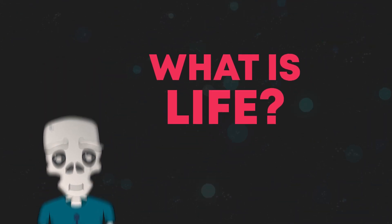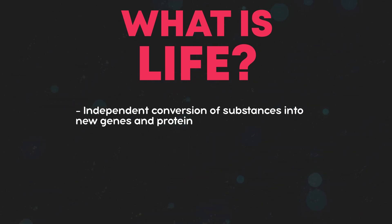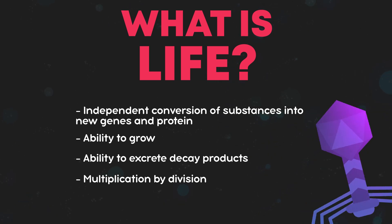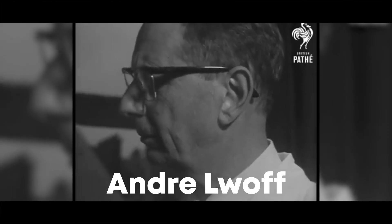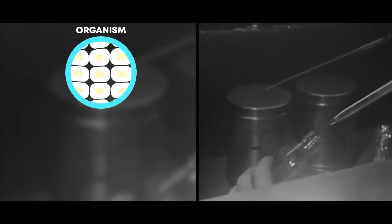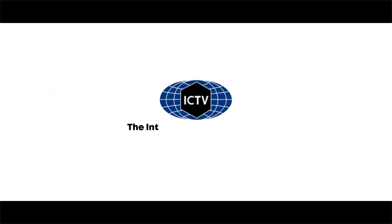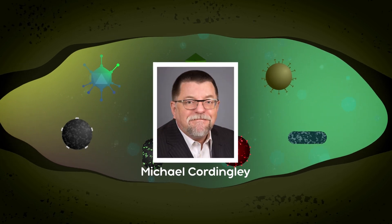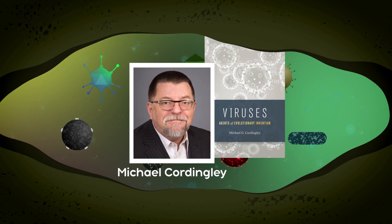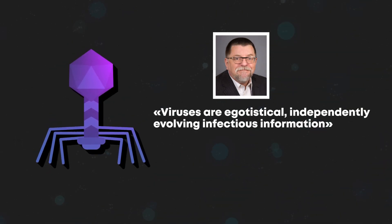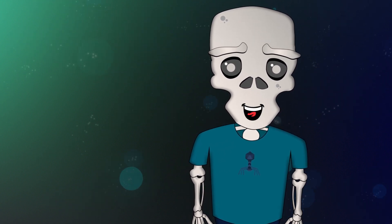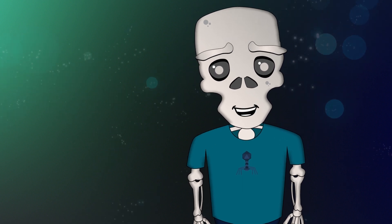Bring the list of life traits up on the screen, please. Independent conversion of substances into new genes and protein. The ability to grow. The ability to excrete decay products. Multiplication by division. Blanks everywhere. In 1967, microbiologist André Lwoff stated that a living organism is made up of cells — but a virus doesn't have cells. So in 2000, the International Commission on the Taxonomy of Viruses announced that viruses are not living organisms. Virologist Michael Cordingley, author of 'Viruses: Agents of Evolutionary Invention,' puts forward an even more interesting wording: they are egotistical, independently evolving, infectious information. In this case, we no longer need to define a living or non-living organism — viruses are simply pure information, the purpose of which is to use the resources of someone else's system to increase the amount of initial information.